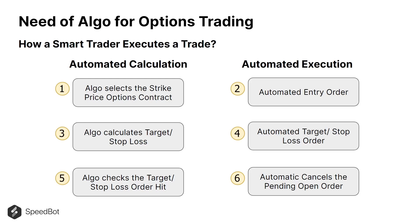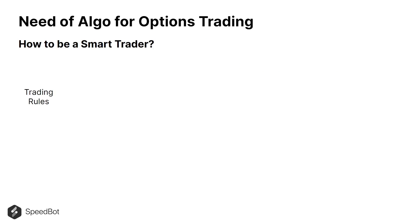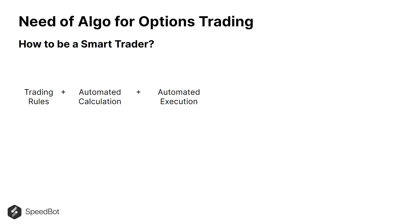Now you can see the difference between how a smart trader and a manual trader execute a trade. To become a smart trader, if you have your trading rules, 33% of the work is done. You need your option trading strategy — those are the trading rules. Next is automated calculation; you just input the parameters and the algo handles all calculations. After that comes automated execution based on what the algo has computed — let the bot do the work for you.